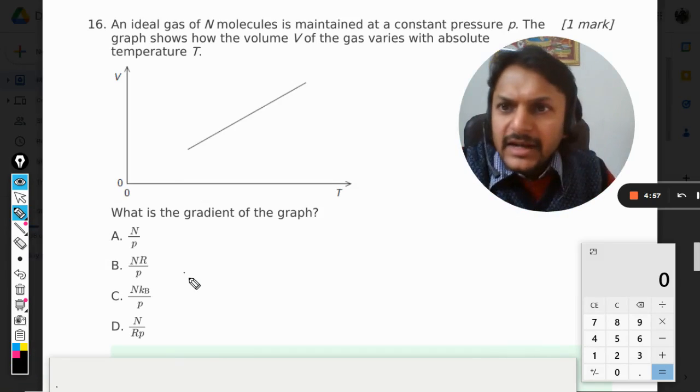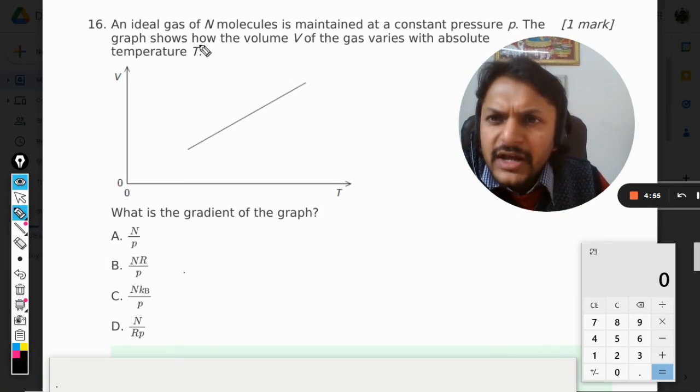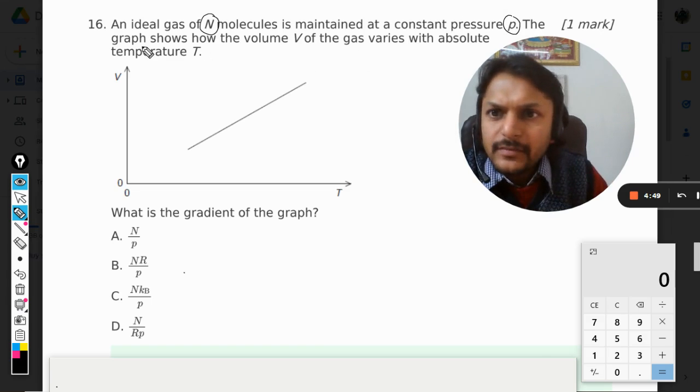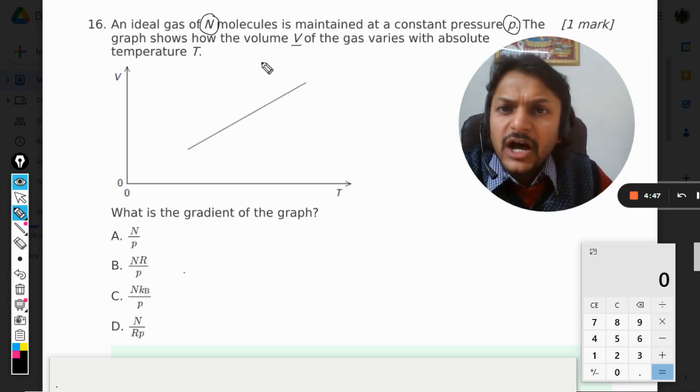Okay dear students, let us see what is there in this question. An ideal gas of N molecules is maintained at a constant pressure P. The graph shows how the volume V of the gas varies with the absolute temperature T.